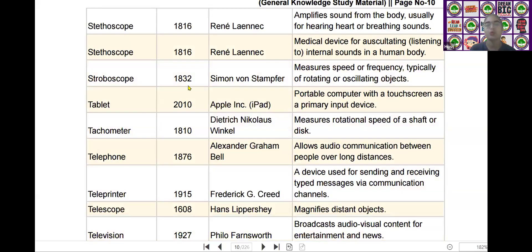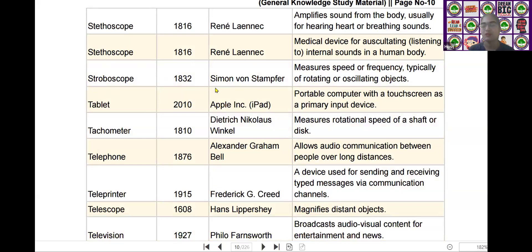The next one is the stroboscope. Stroboscope was invented by Simon von Stampfer in the year of 1832. It measures speed or frequency, typically for rotating or oscillating objects.